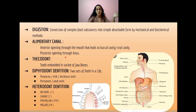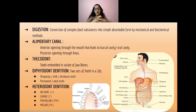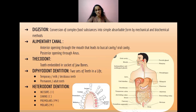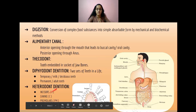Diphyodont dentition means two sets of teeth that happen in a lifetime in mammals. The first is the temporary teeth, also called milk teeth or deciduous teeth. The second is the permanent or adult teeth that come in the later phase of life or growth.